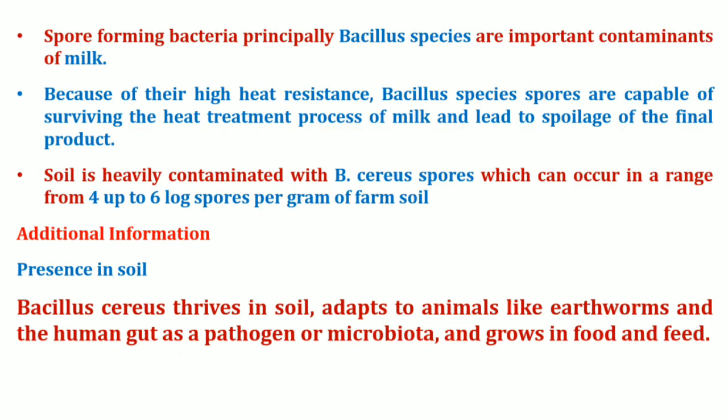Let's see the explanation. Spore-forming bacteria, principally the Bacillus species, are important in the dominance of milk. Because of their high heat resistance, Bacillus species spores are capable of surviving the heat treatment process of milk, and this leads to the spoilage of the final product. Soil is highly contaminated with Bacillus species and spores, which can occur in a range of 4 up to 6 log spores per gram of farm soil.